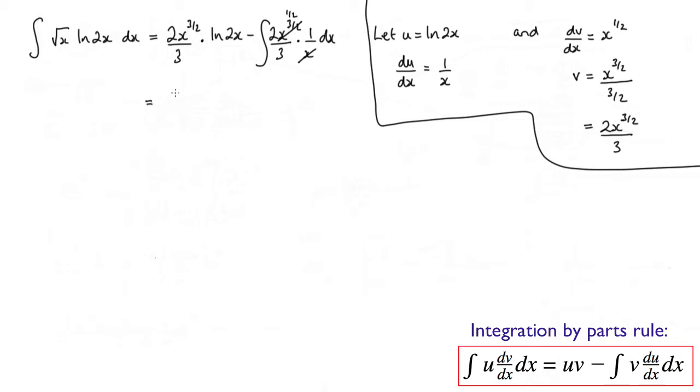So let's just rewrite that. So I've got 2 thirds of x to the 3 over 2 times log 2x minus, well, I've got this 2 thirds here. So let me bring that outside the integral. So 2 thirds, and we've got the integral of x to the power of 1 half dx.